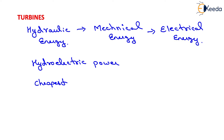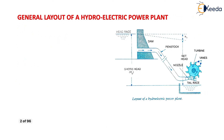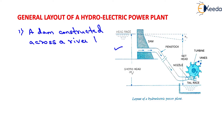We will discuss the general layout of a hydroelectric power plant. This figure shows a general layout which consists of a dam constructed across a river to store water. Second, pipes of large diameter called penstocks, which carry water under pressure from the storage reservoir to the turbine. These pipes are made of steel or reinforced concrete.